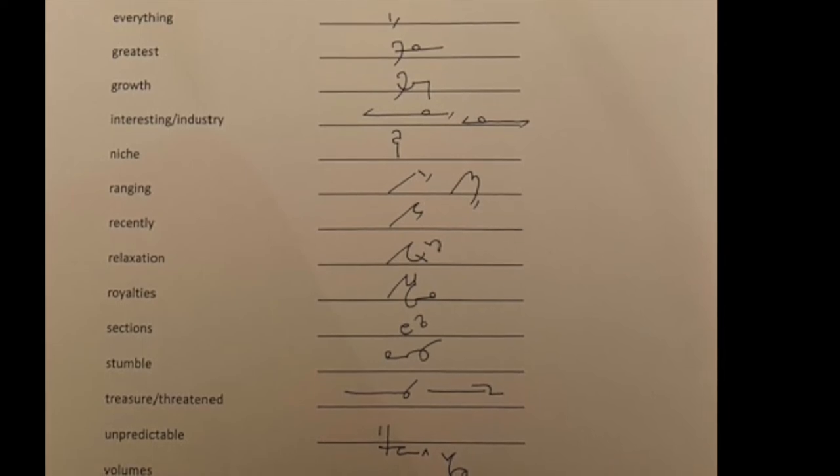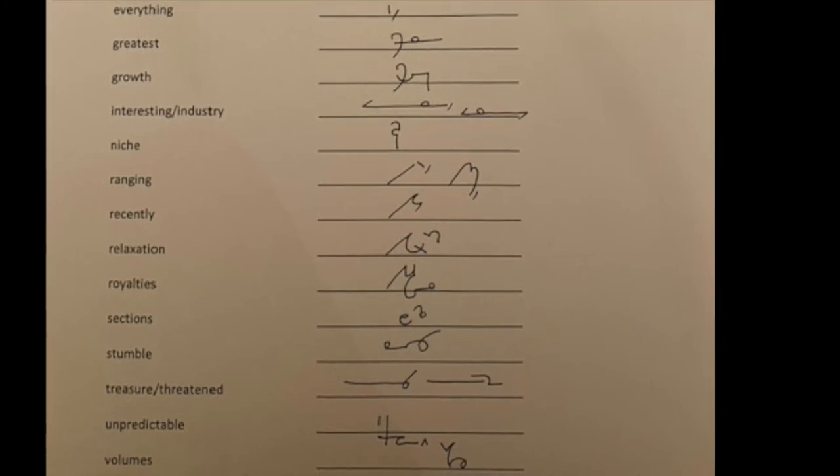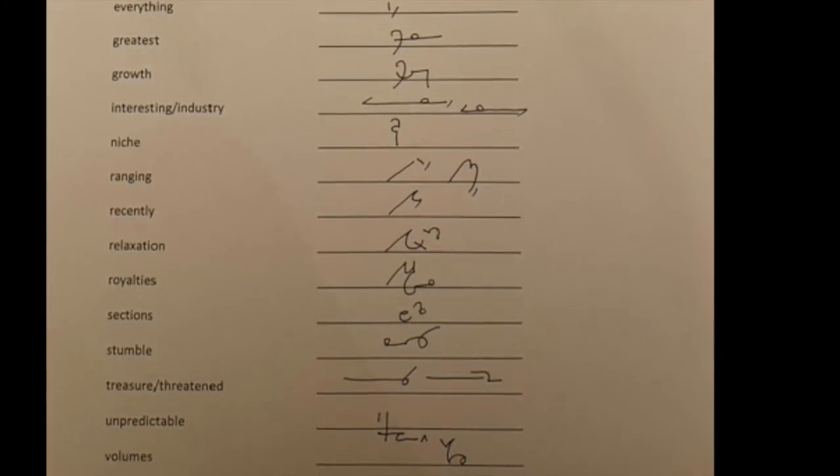In threatened, following the THR, the next T goes high, the N is blended in, and then the final D.